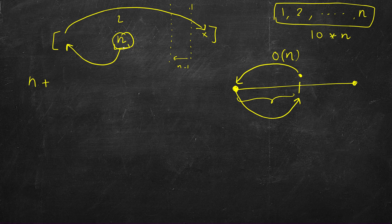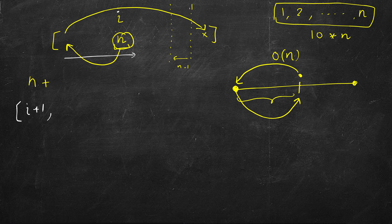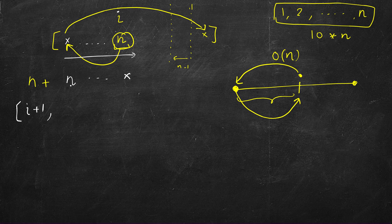So the algorithm is: first, find where the nth element is at index i; flip that prefix (add i+1 to result using one-based indexing). After flipping, n comes to the beginning and the elements before it get reversed, while the rest remains unchanged. Then flip the entire prefix of size n so that n lands at its correct last position.